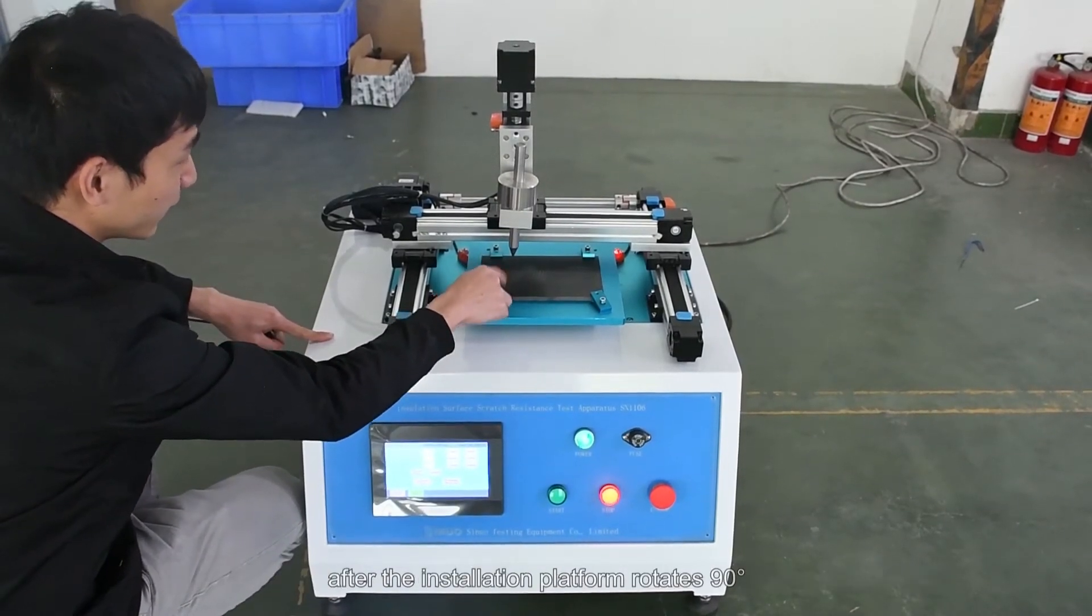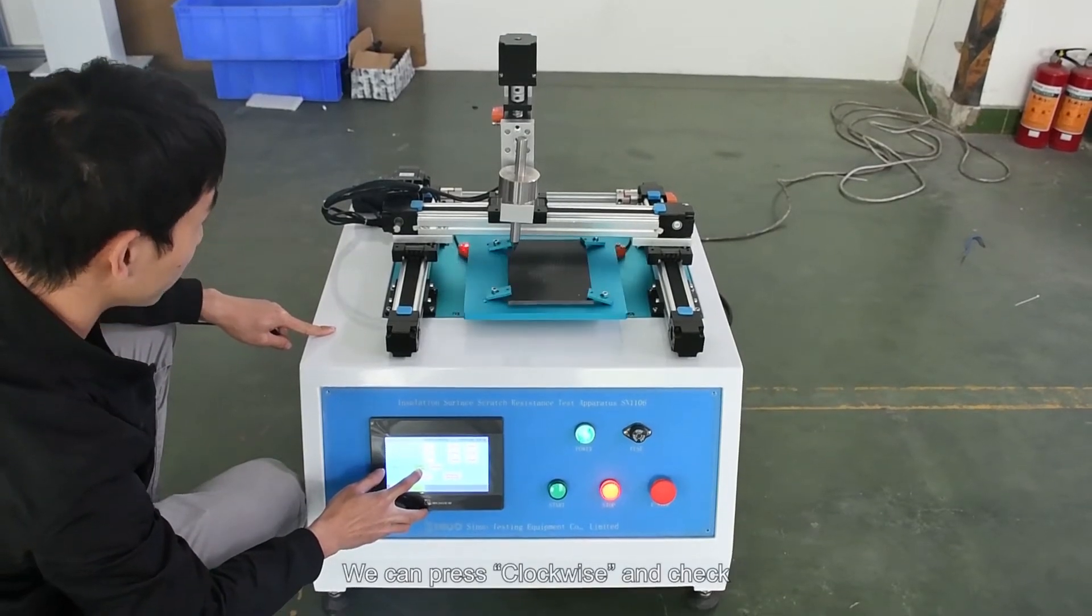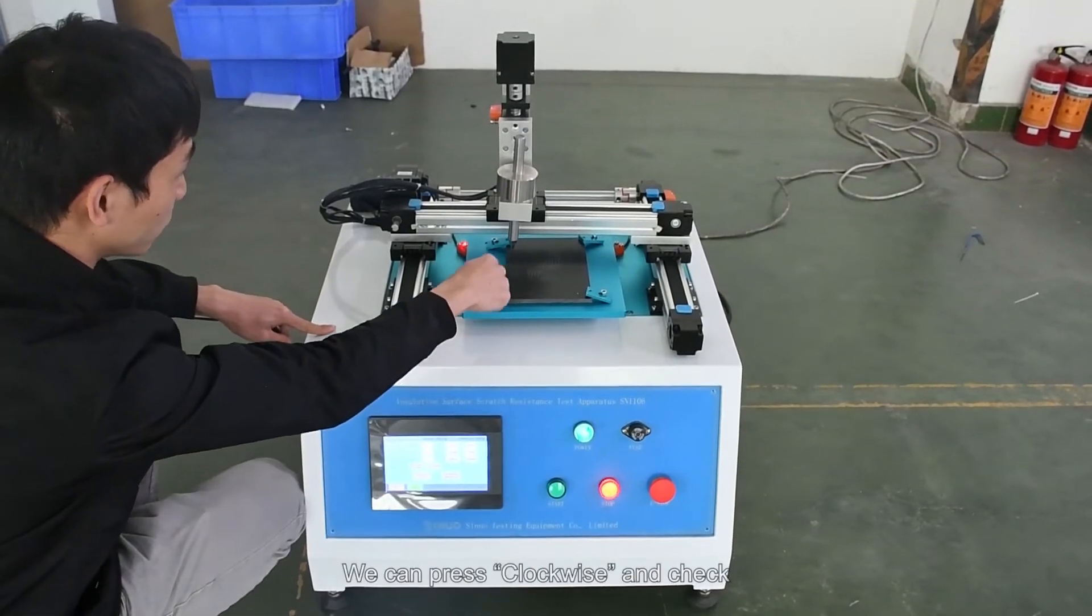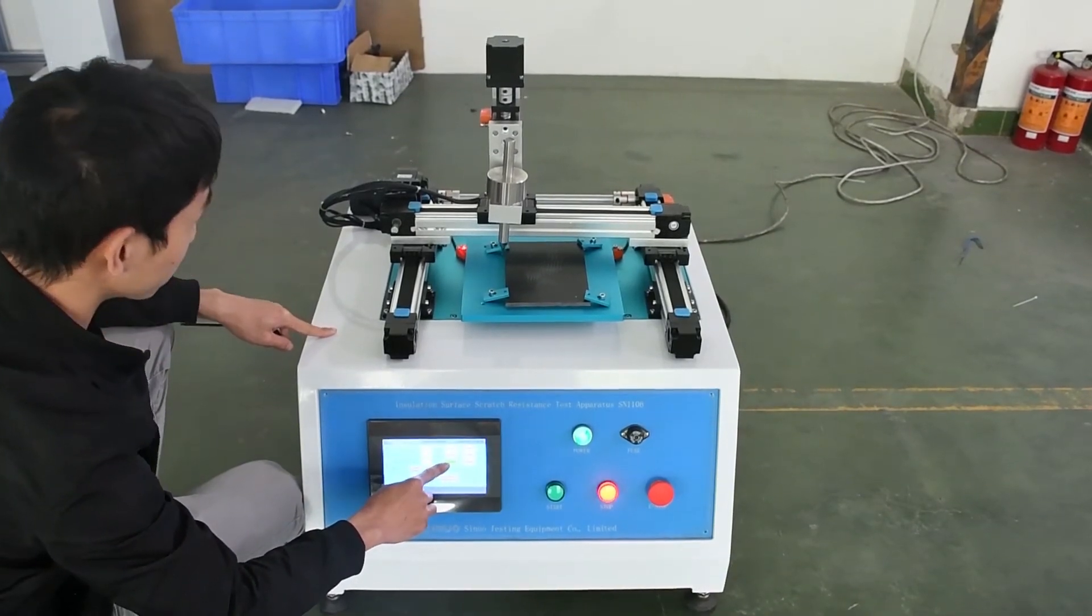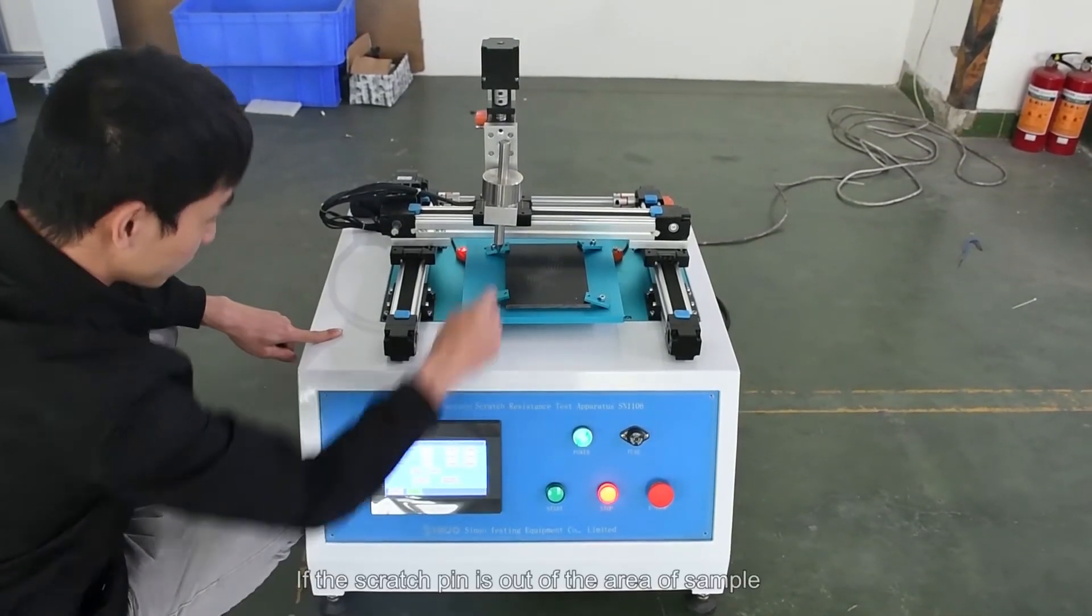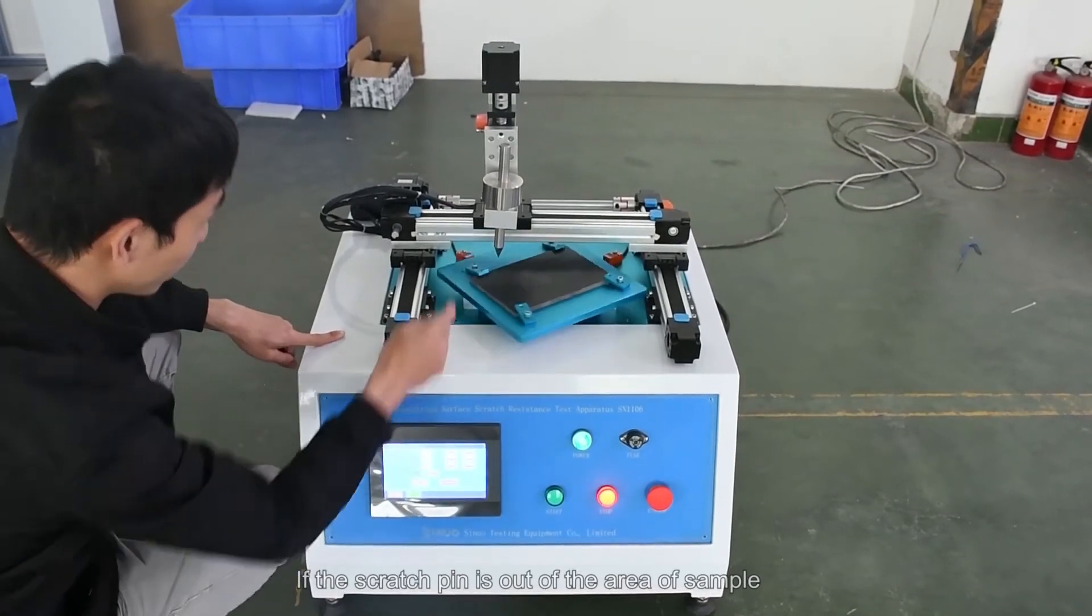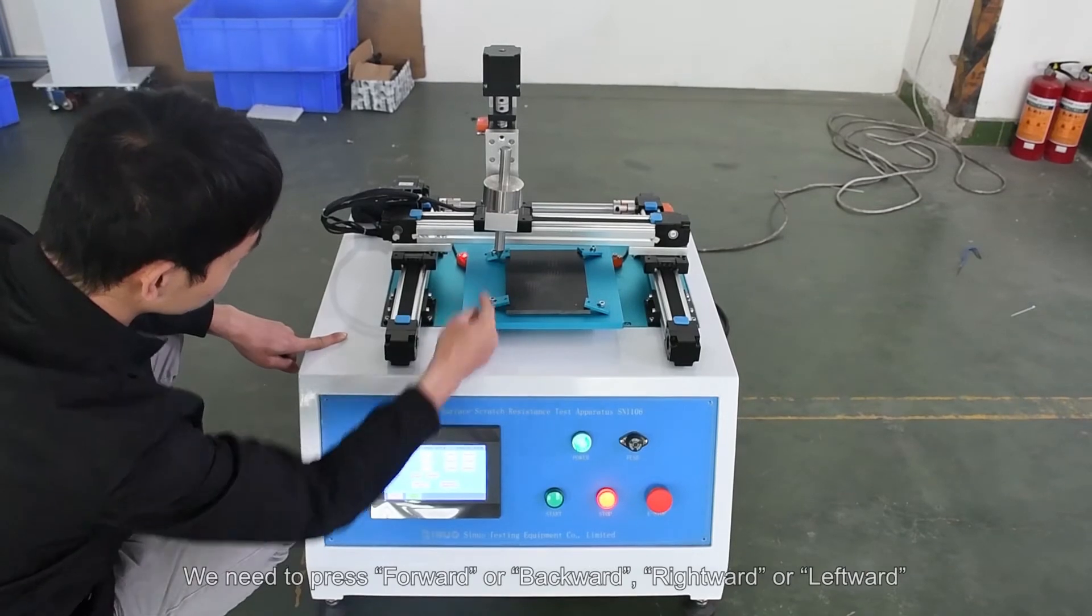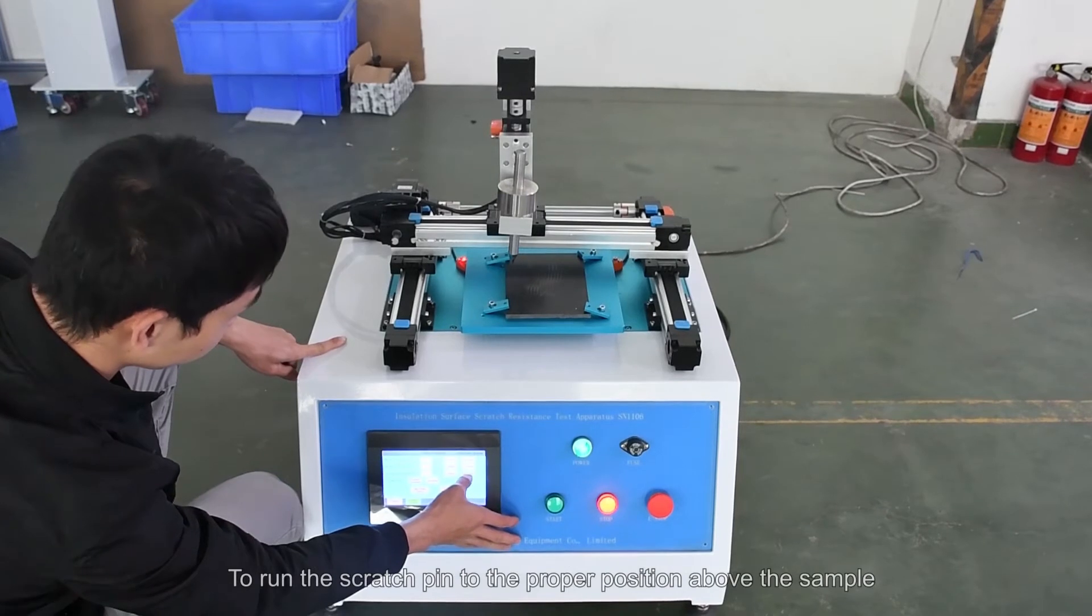After the installation platform rotates 90 degrees, we can press clockwise and check. If the scratch pin is out of the area of sample, we need to press forward or backward, rightward or leftward to run the scratch pin to the proper position above the sample.